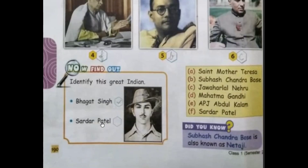Below you can see a picture — can you identify him? He is Bhagat Singh. He was born on 28th September 1907. He was an Indian revolutionary, meaning Krantikari. Thank you, see you in the next session.